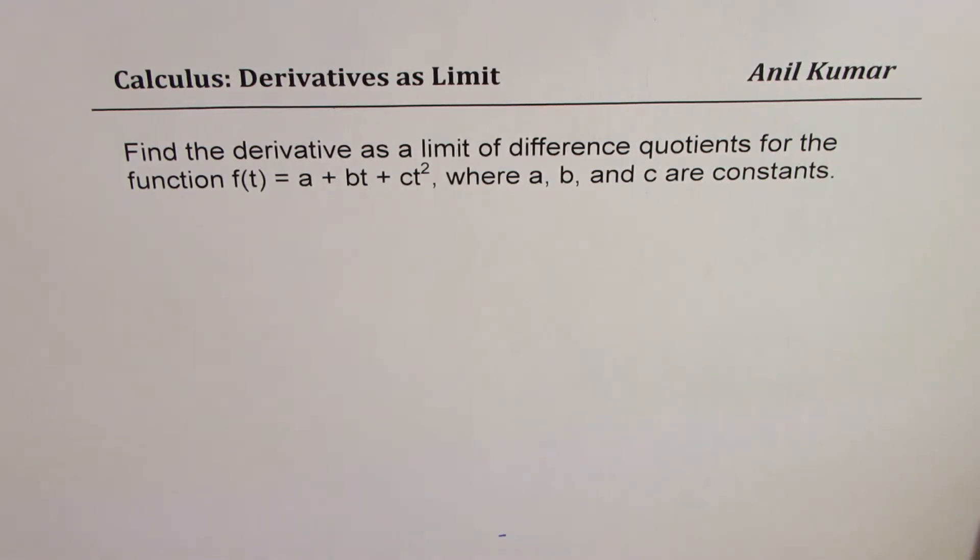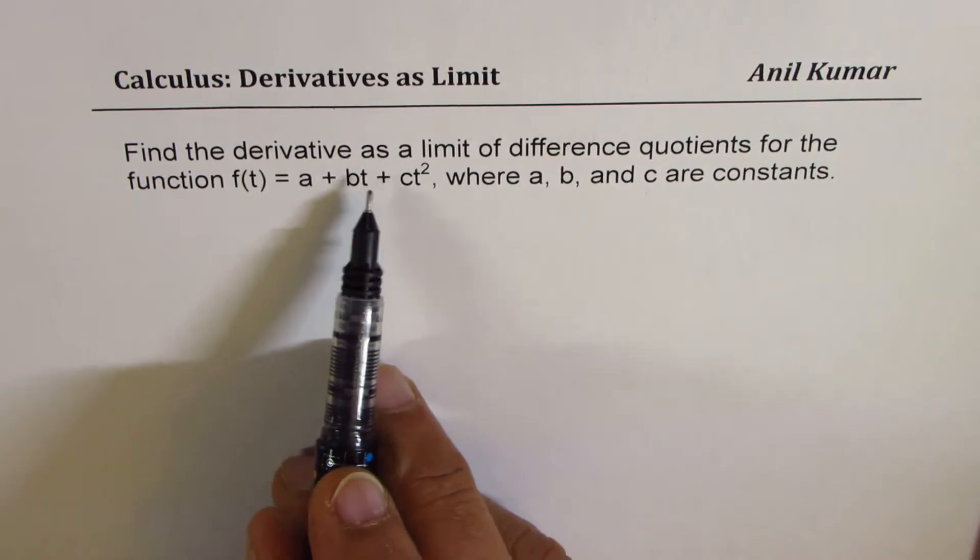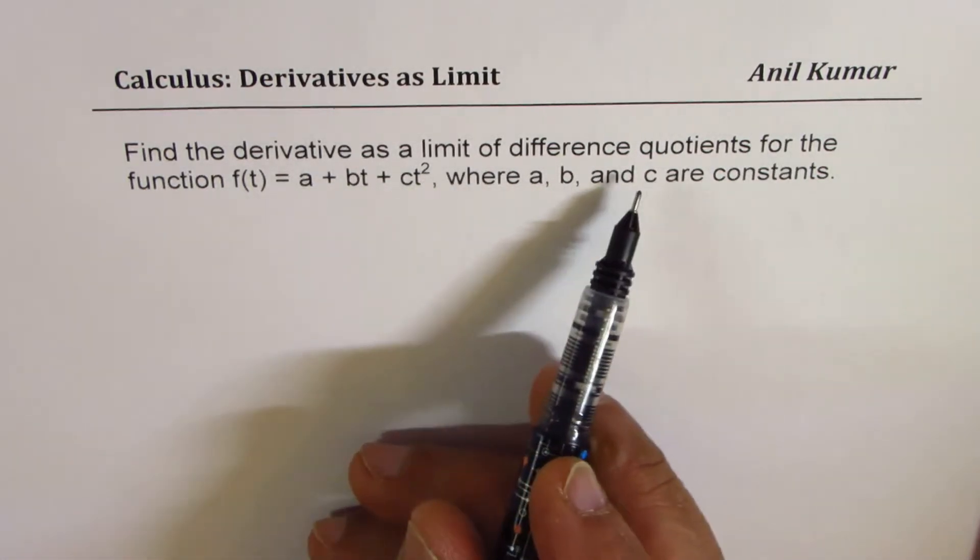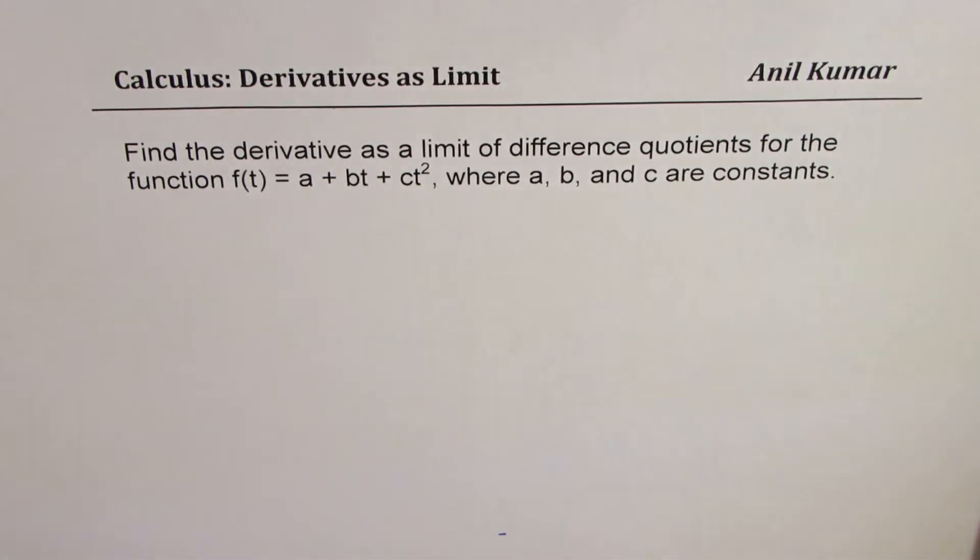The question here is, find the derivative as a limit of difference quotients for the function f of t equals to a plus bt plus ct squared, where a, b, and c are constants.